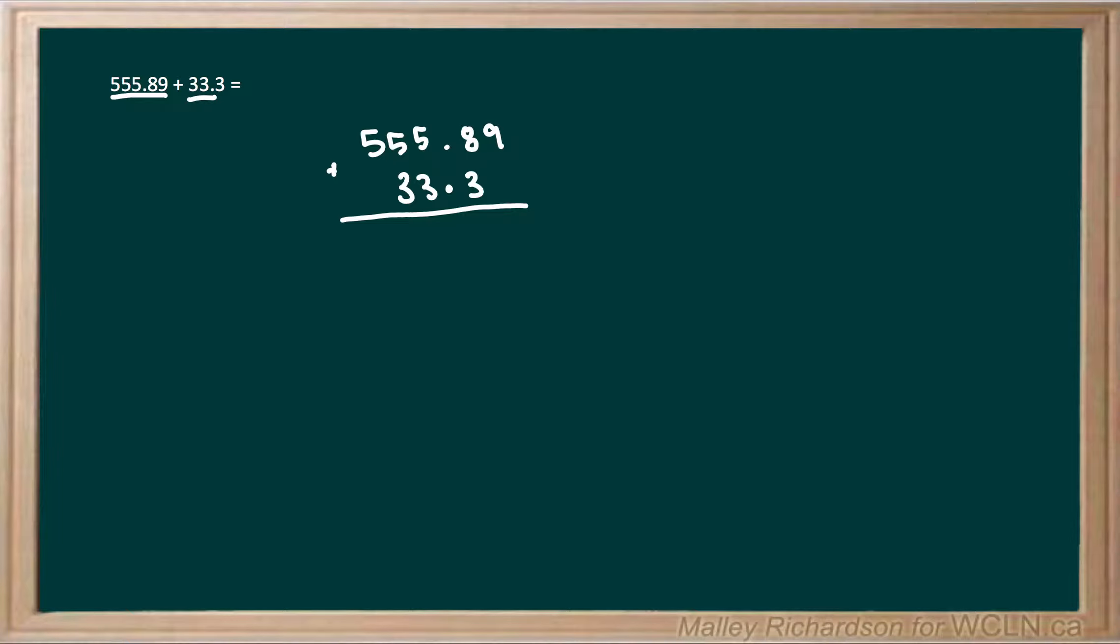So now let's start our question. We first start with the far right, so in this case it's this 9. We have 9 plus nothing, so we're just going to write our 9 directly below it in our answer.